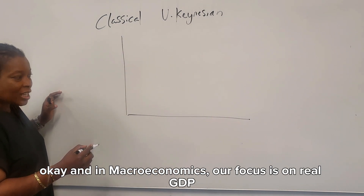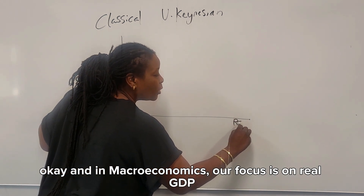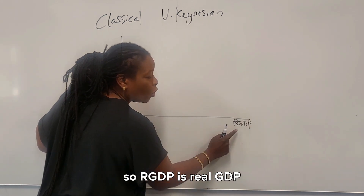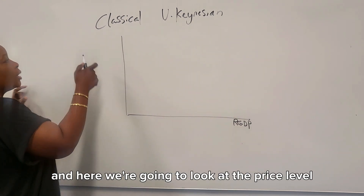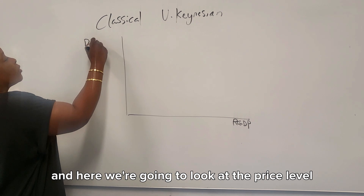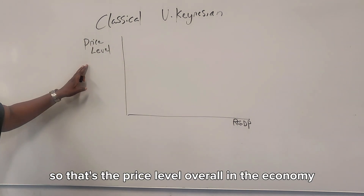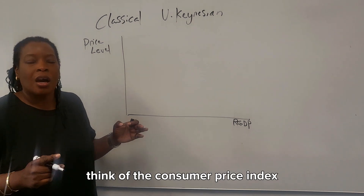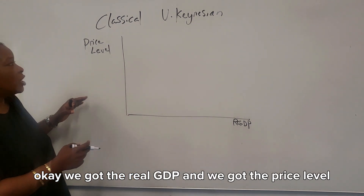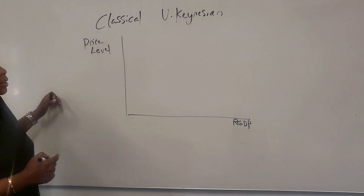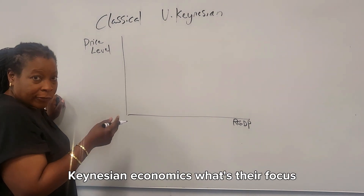In macroeconomics our focus is on real GDP, so our x-axis is real GDP, and here we're going to look at the price level — the overall price level in the economy. Think of the consumer price index. So we have real GDP and the price level.